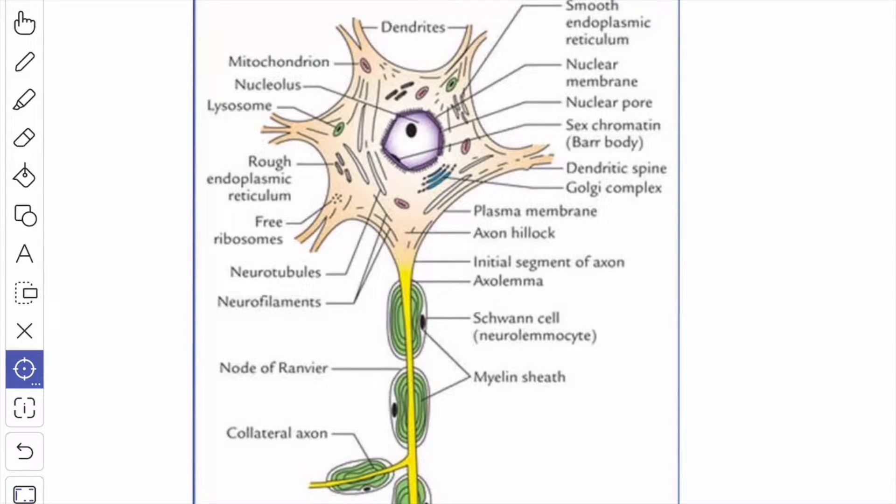The nucleus is central in position, it's large and vesicular and contains a prominent nucleolus.